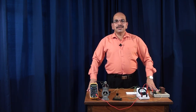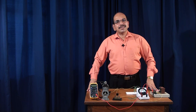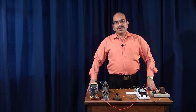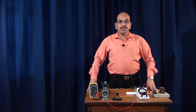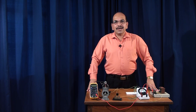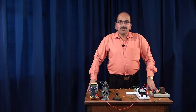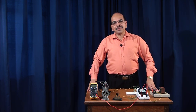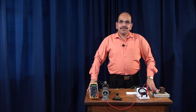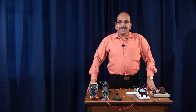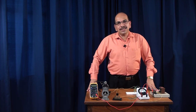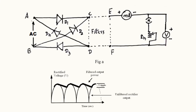Basically there are different types of rectifiers: half wave rectifier and full wave rectifier. In full wave, again two types — full wave rectifier and full wave bridge rectifier. Today I am going to discuss about the full wave bridge rectifier, which requires four junction diodes connected in a bridge fashion. Let me show you that particular circuit first.